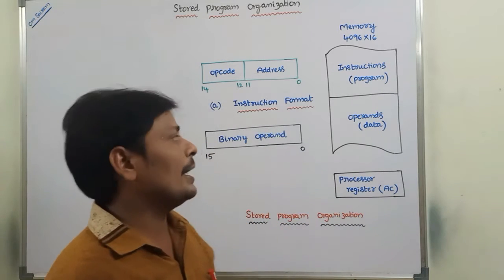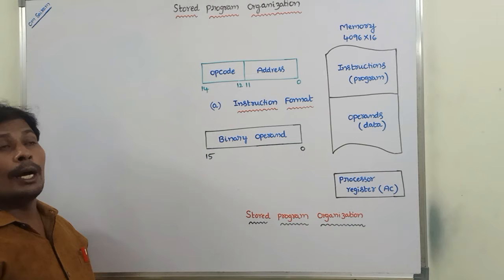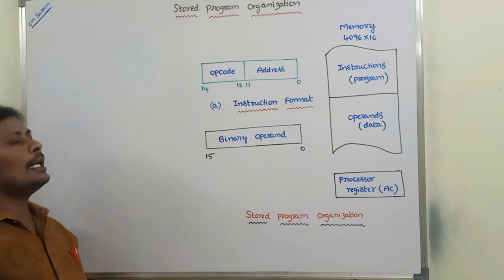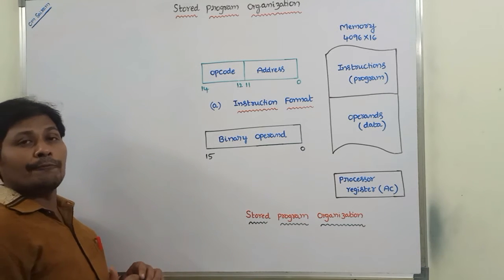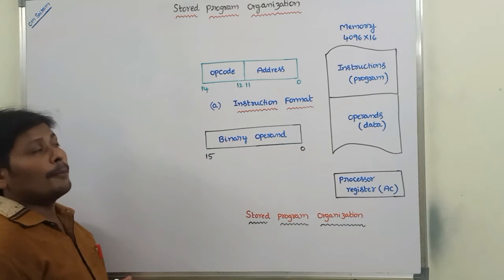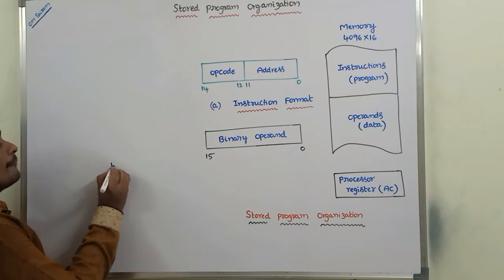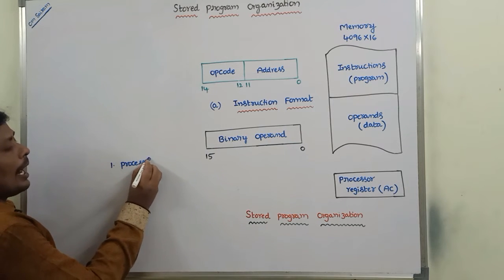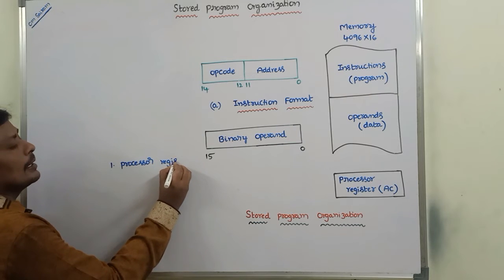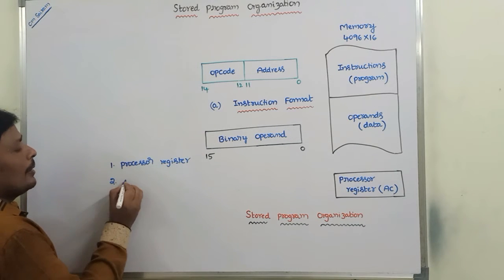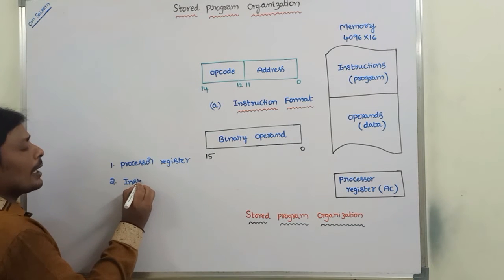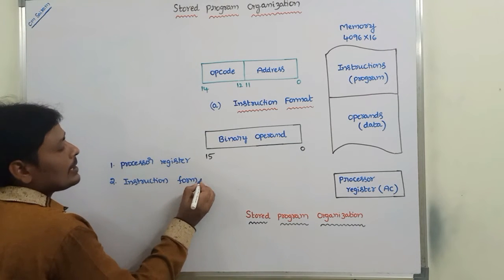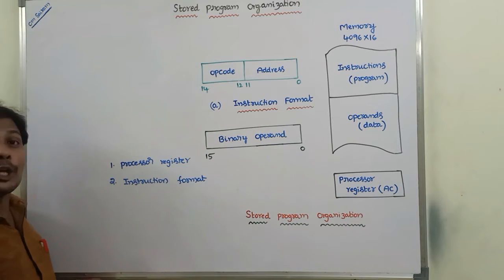In this video, we have to discuss about what is stored program organization and how it works. The simplest way to organize a computer is by using two components. The first one is called as processor register and the second one is called as instruction format. By using these two components, we organize the computer in a simple manner. The first one is called as accumulator.